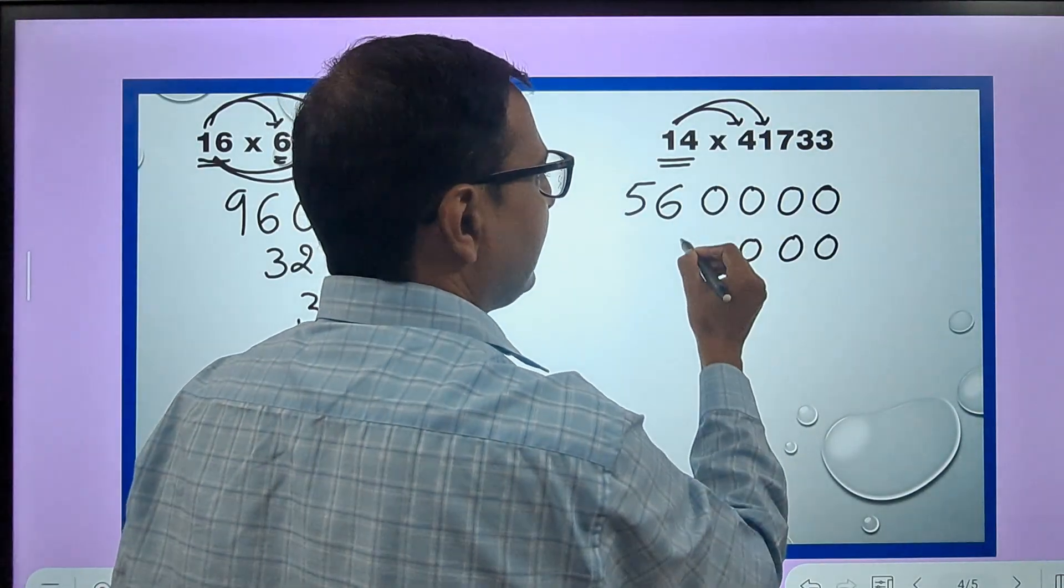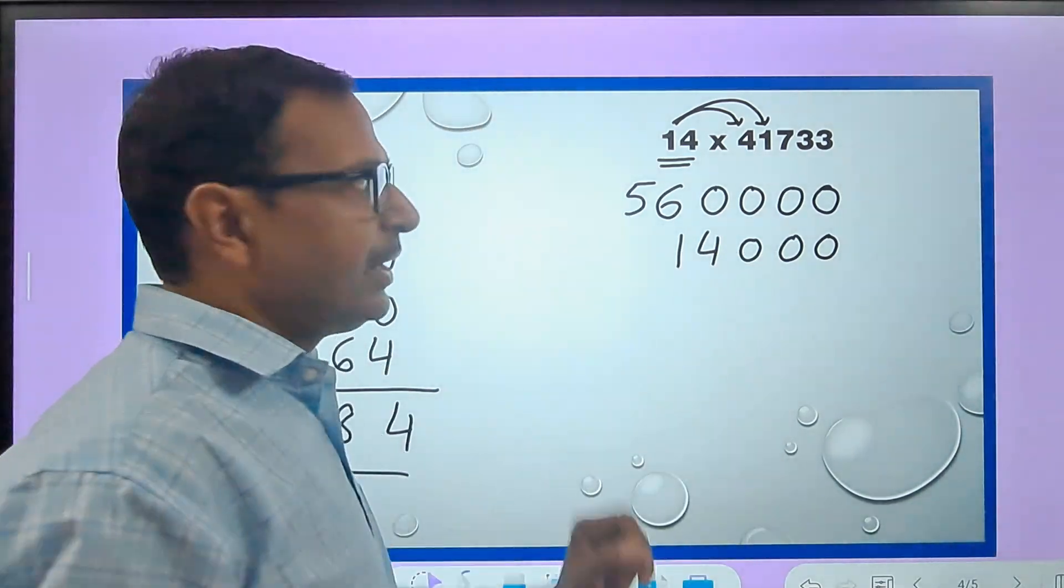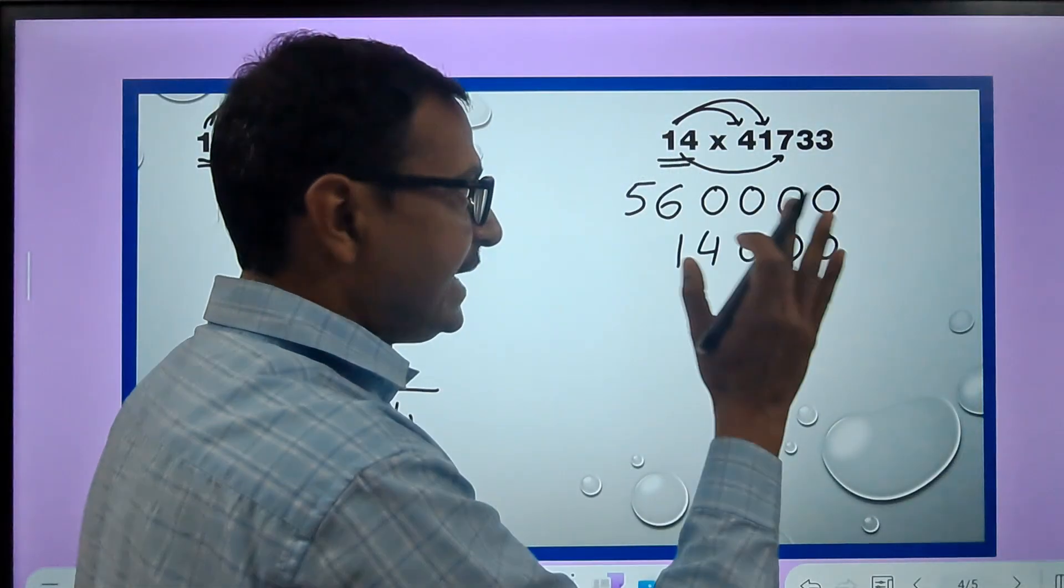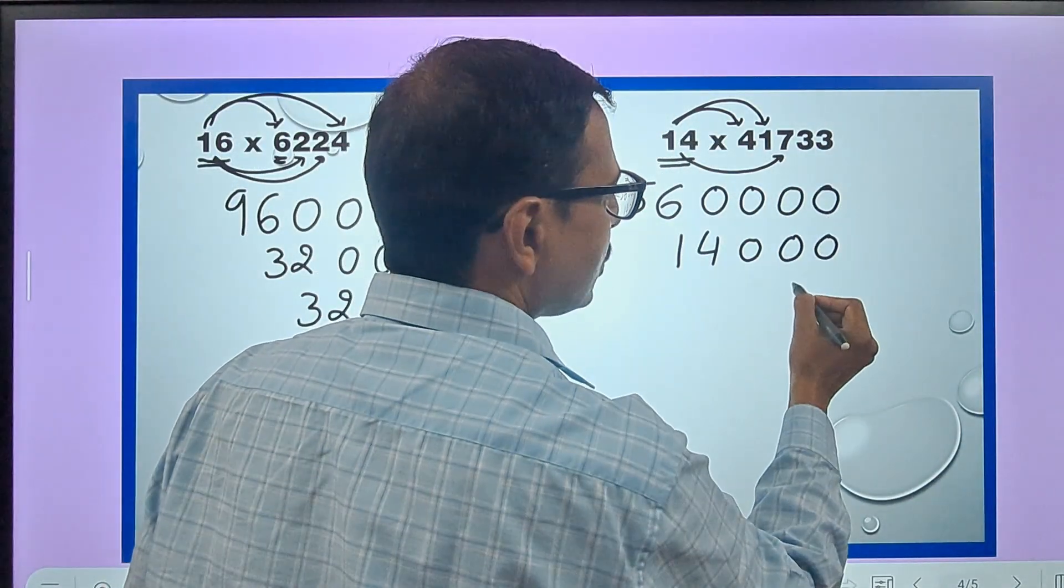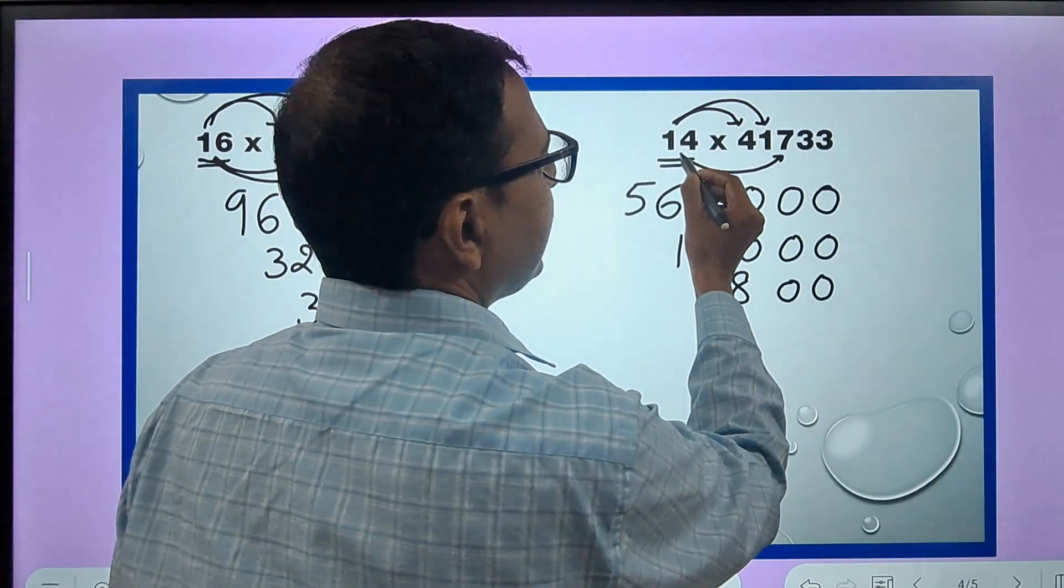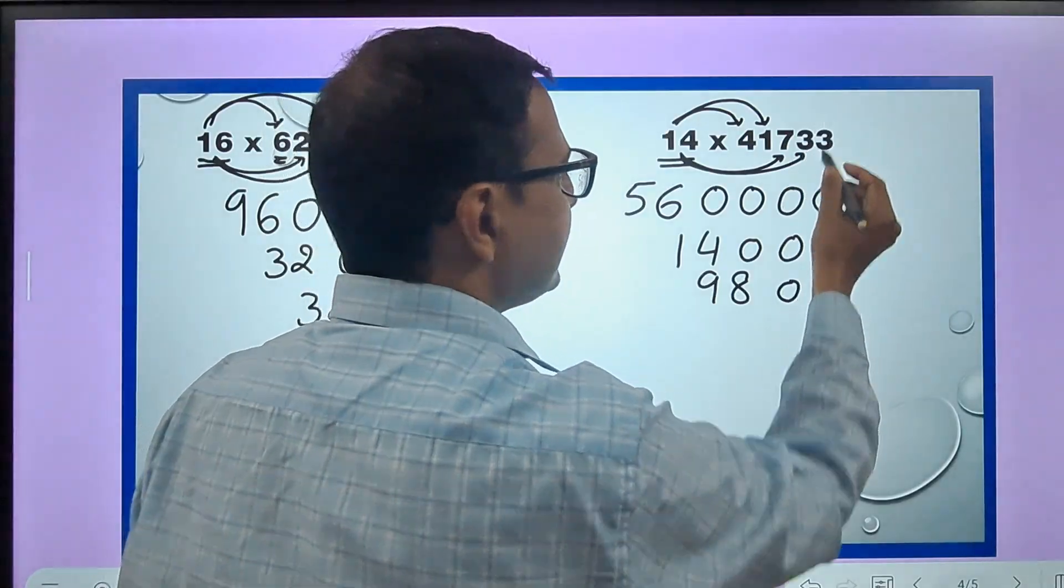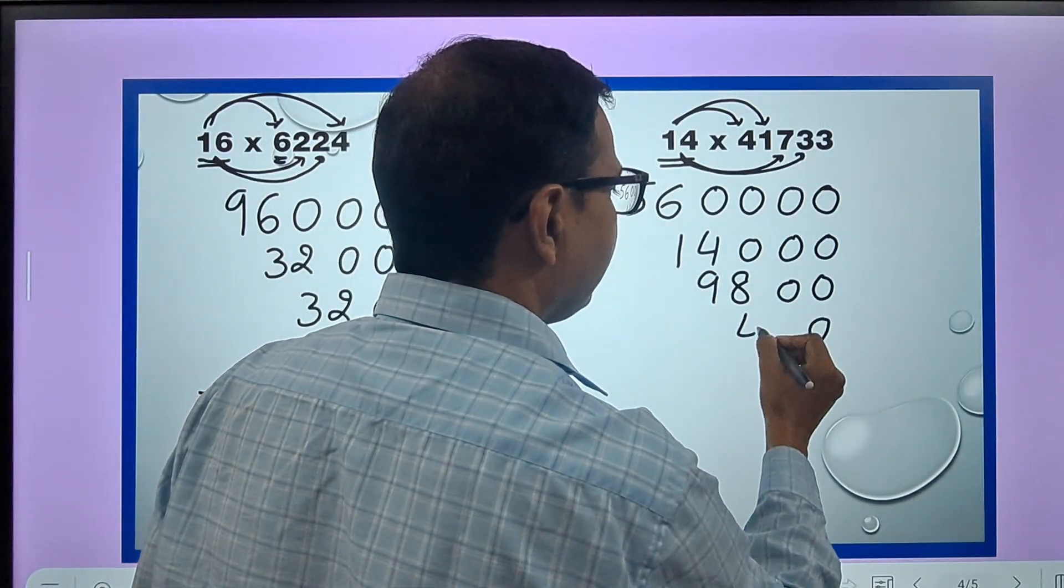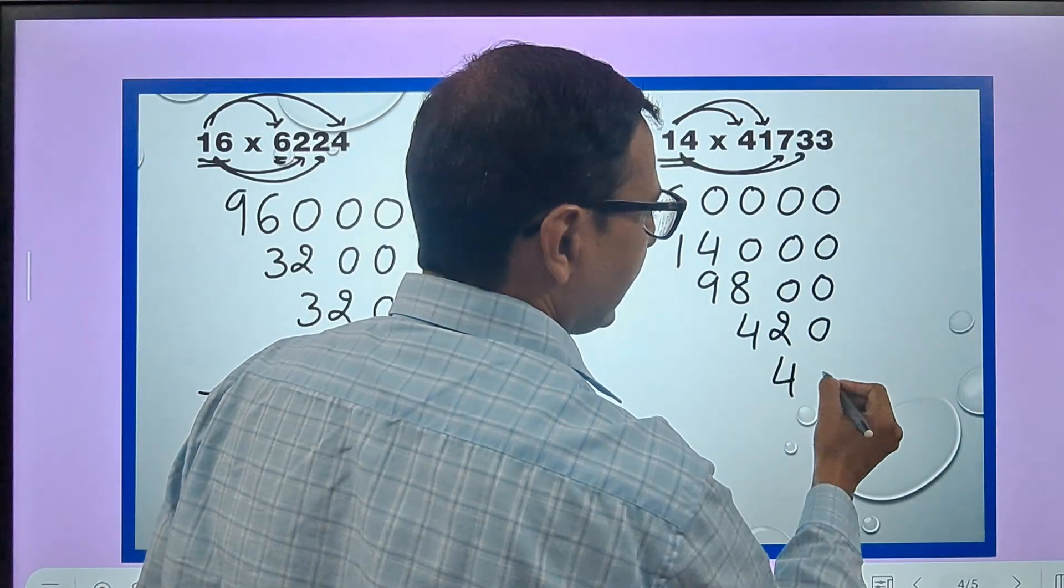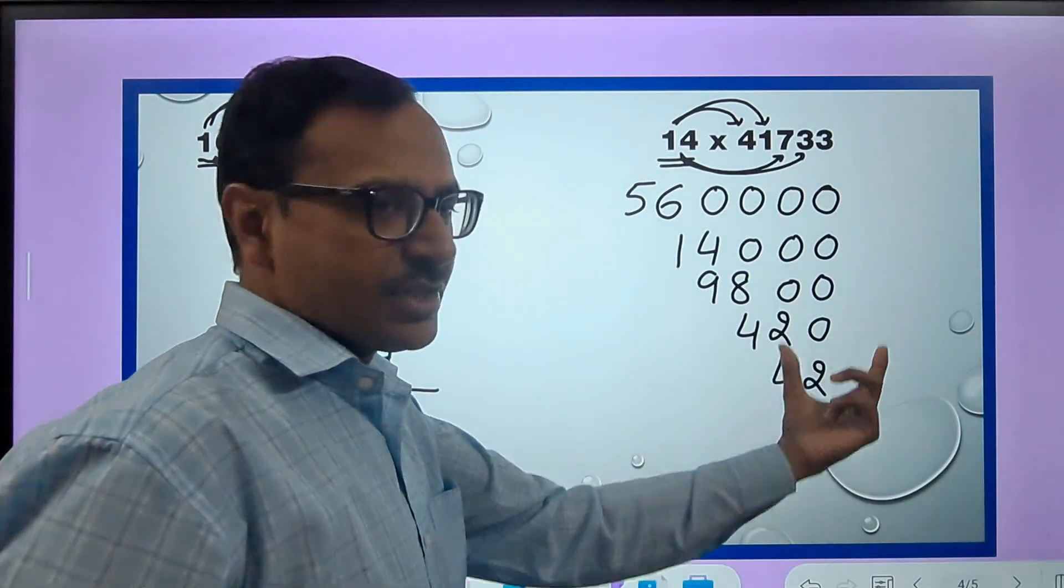And then 14 times 7 is 98 followed by 2 zeros, so 2 zeros and then I write 98. Then 14 times 3 is 42 and a zero, so zero and a 42 like this. And then 14 times 3 is 42 which I have to write in the last 2 digits below the last 2 digits.